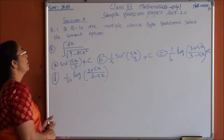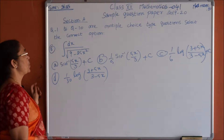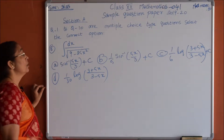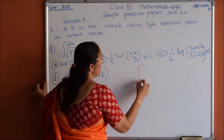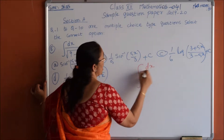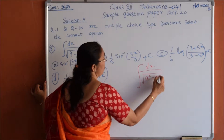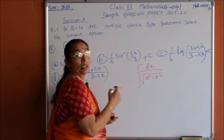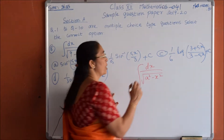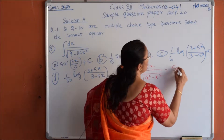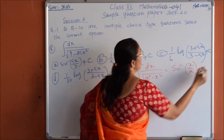Question number 8: integration of dx by root over 9 minus 25x squared. We try to bring this in the form of integration of dx by root over a squared minus x squared, so that we can use the formula: integration of dx by root over a squared minus x squared is sin inverse of x by a plus c.